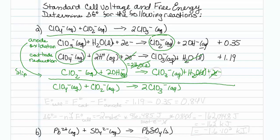Now, E cell is going to be equal to E cathode minus E anode. So my cathode is 1.19. My anode is 0.35. So putting that into my calculator, minus 0.35 is a voltage of 0.84 volts.